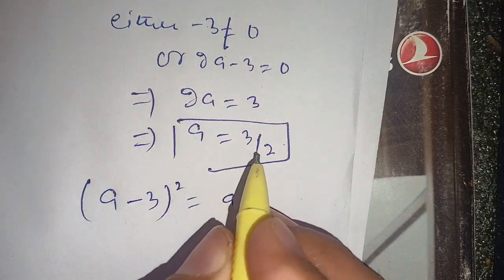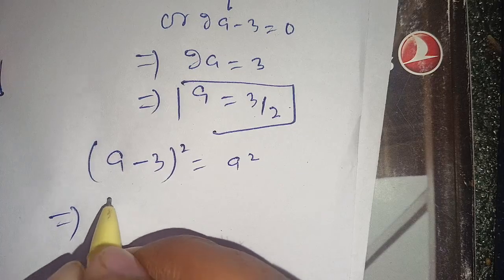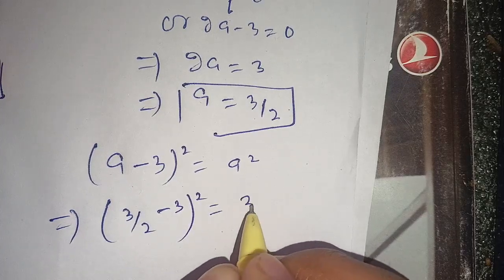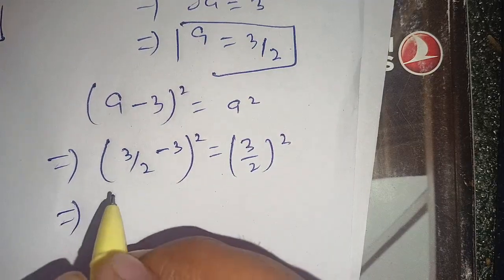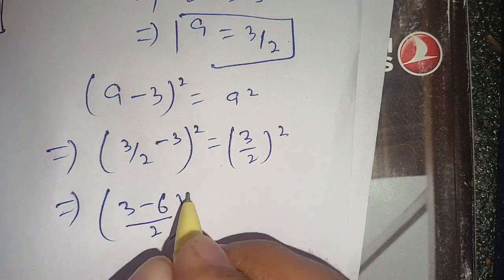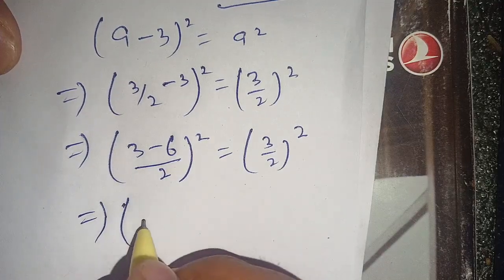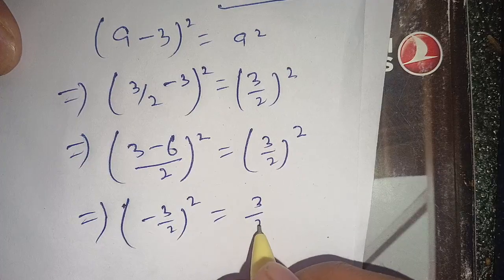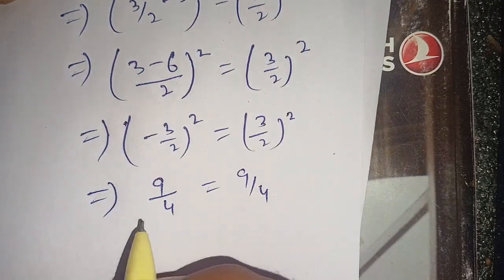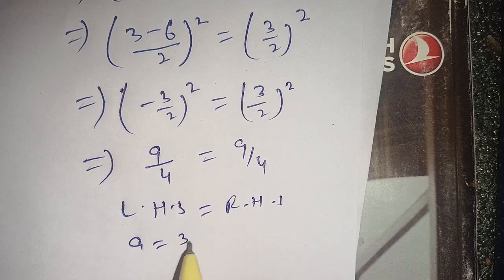Now substituting a equal to 3/2, we can check whether it satisfies our given equation or not. We substitute 3/2 in place of a: (3/2 minus 3) whole square is equal to (3/2) whole square. This becomes (3 minus 6)/2 whole square, which is (minus 3/2) whole square, equal to (3/2) whole square. This gives 9/4 equal to 9/4, so the left hand side equals the right hand side, which proves that a equal to 3/2 satisfies our given algebra problem.